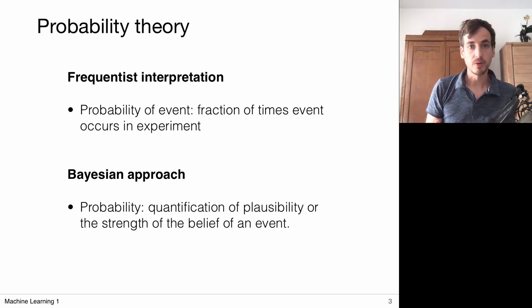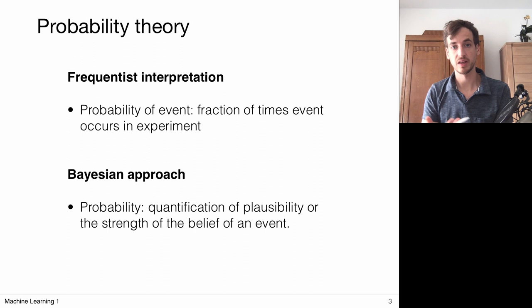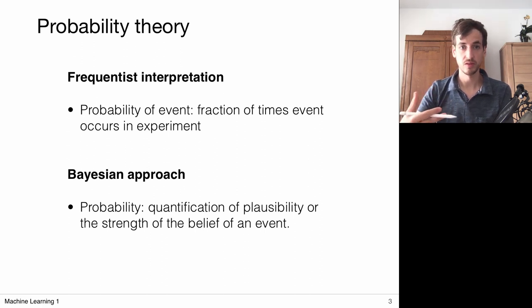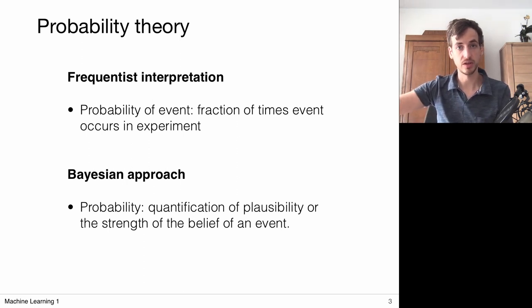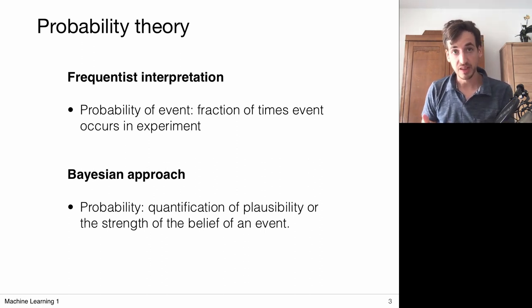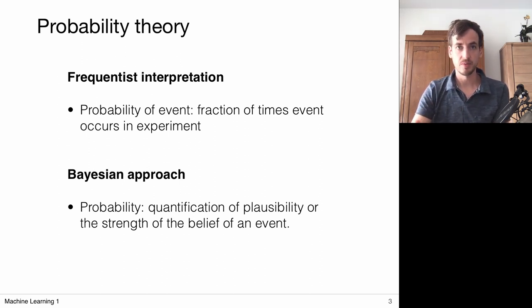When we talk about probability theory, we can take on a frequentist interpretation, in which case probability is defined as the fraction of times an event occurs in an experiment. We observe random variables and count how many times a particular event happens, and this defines a probability used to make predictions. In a Bayesian approach, the viewpoint is fundamentally different — probability takes on the meaning of a quantification of plausibility, or the strength of a belief, and it is a more modeling-based, generic approach.